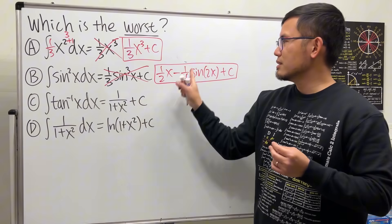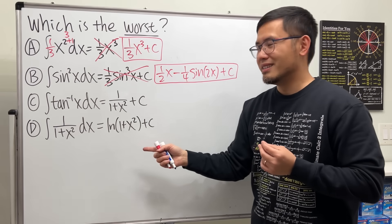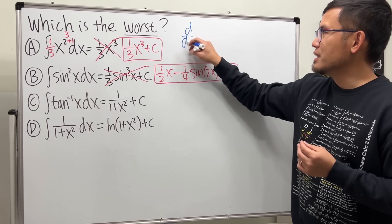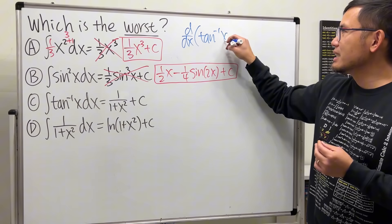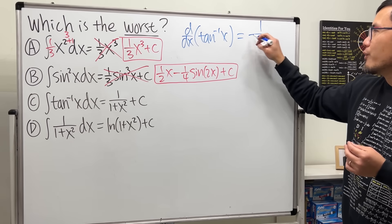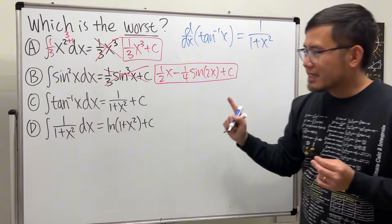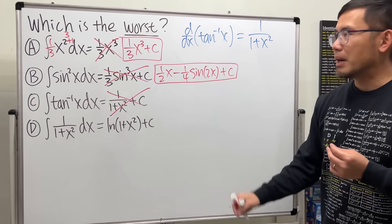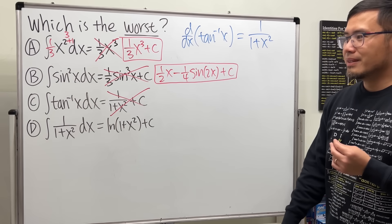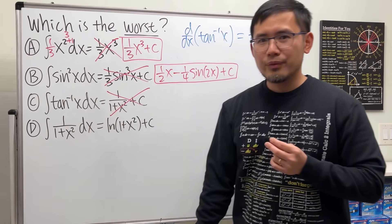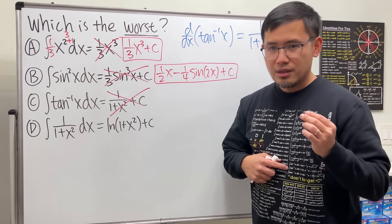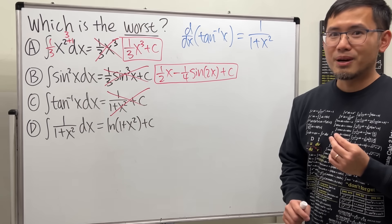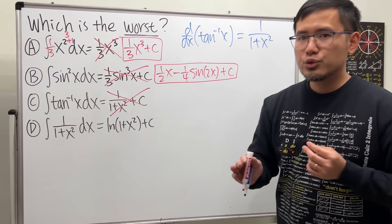Now, what's wrong with this next one? There's a connection people confuse: the derivative of inverse tangent of x is 1/(1 + x²). But the question here is the integral of inverse tangent of x — it's not the same thing. Don't confuse them. So how do we integrate arctan(x)? It's on my shirt — you can take a look — but I'll show you with integration by parts.